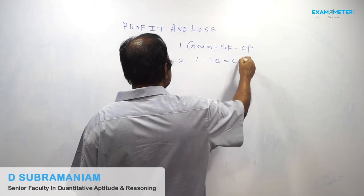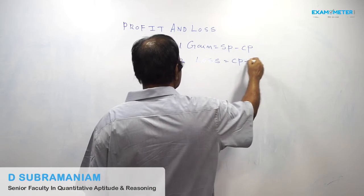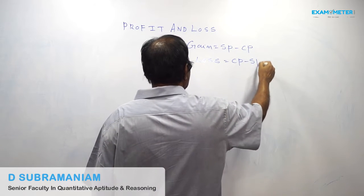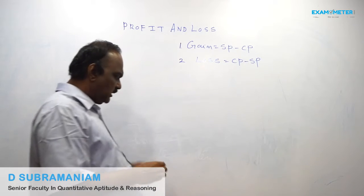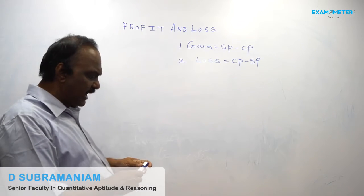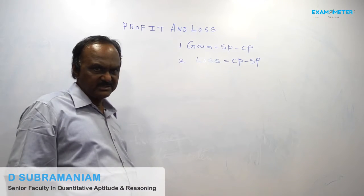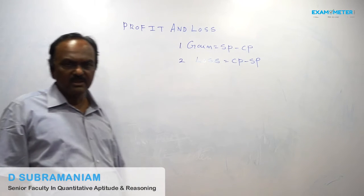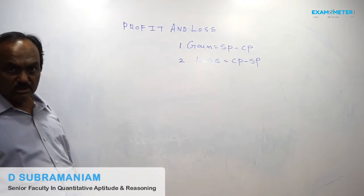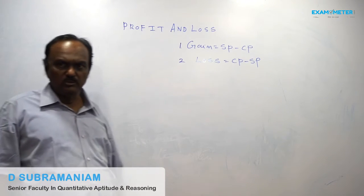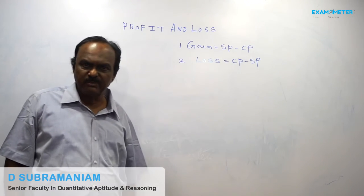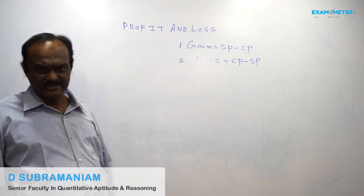Second point: Loss is equal to Cost Price minus Selling Price. So, Loss = CP − SP.